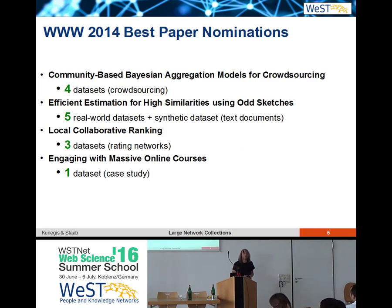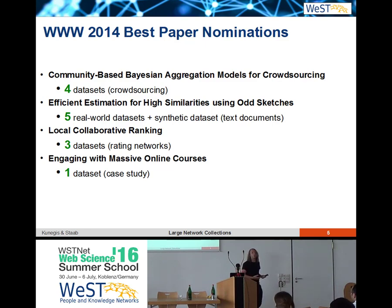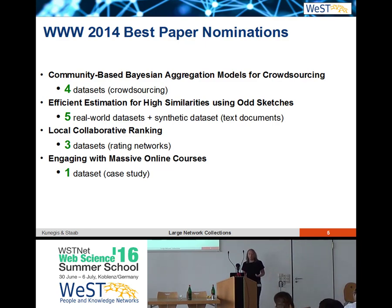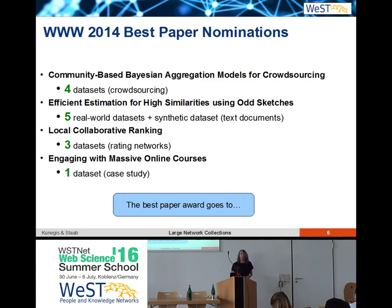Now let's look at some newer work on analyzing online social networks. If you look at the WWW conference from two years ago, these are the four papers nominated for the best paper award. I looked at how many different datasets these papers used: one paper used one dataset, one used three, one used four, one used five. The question is: can you guess which paper won the best paper award?